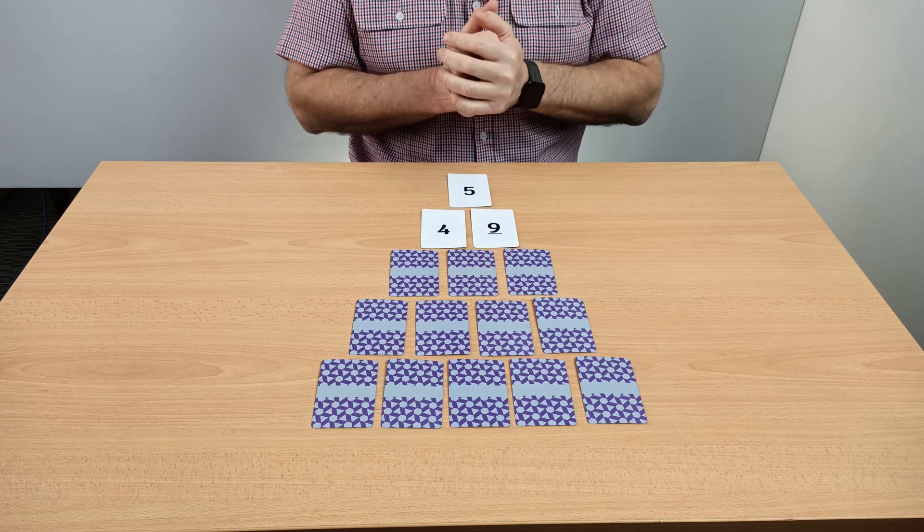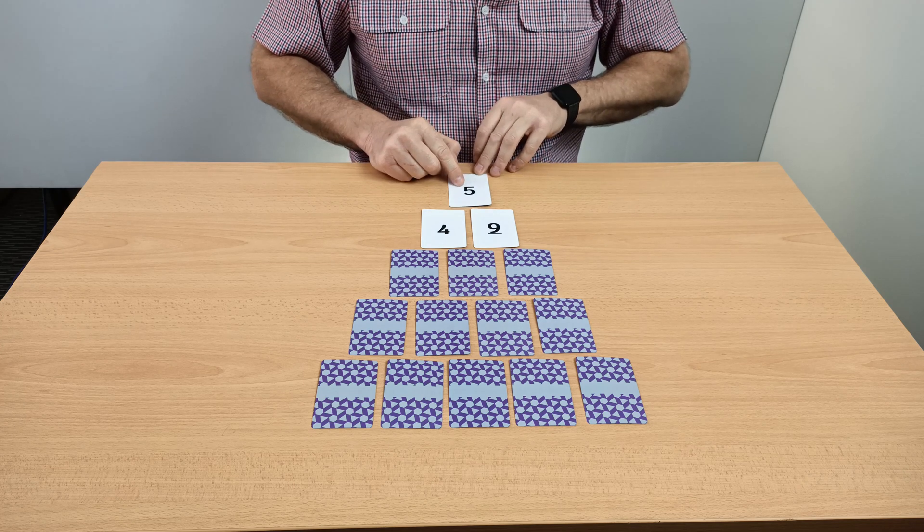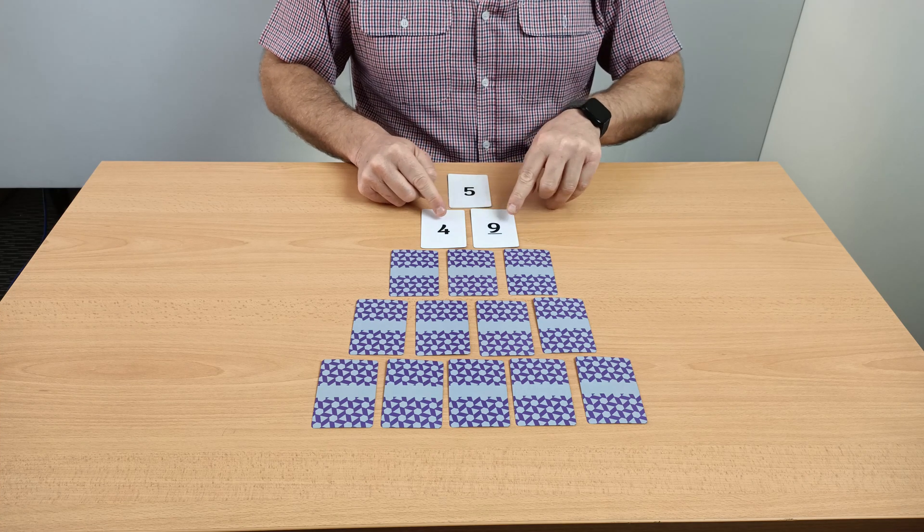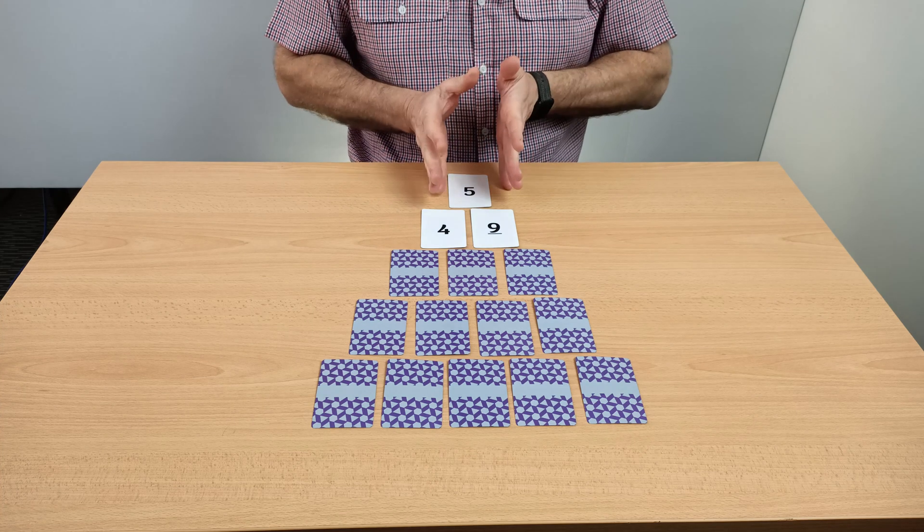Now the way the cards are lined up or arranged follows one simple rule. We have a five here which is actually the difference between nine and four. So the difference between nine and four was five and so that's the card that goes there.